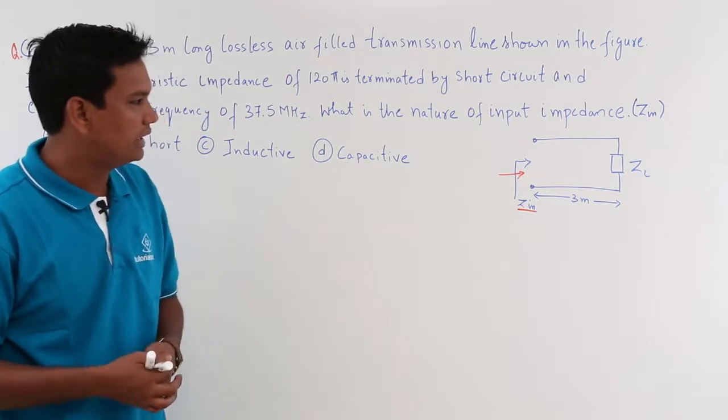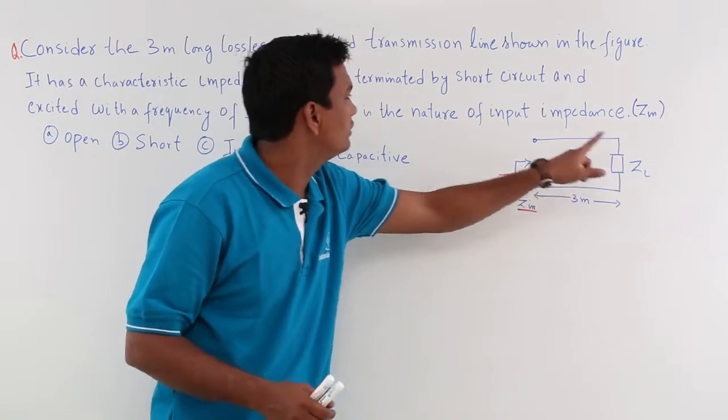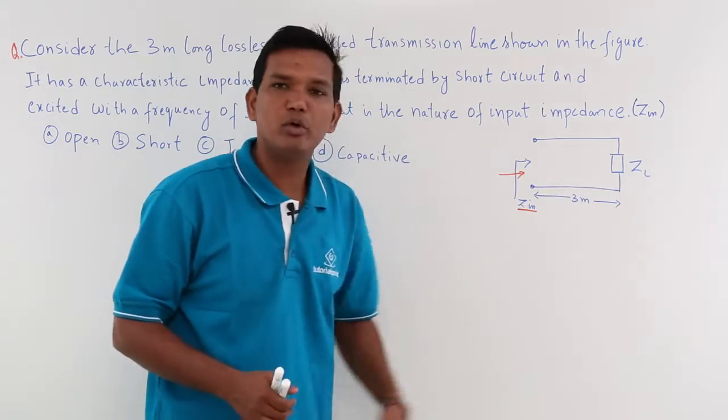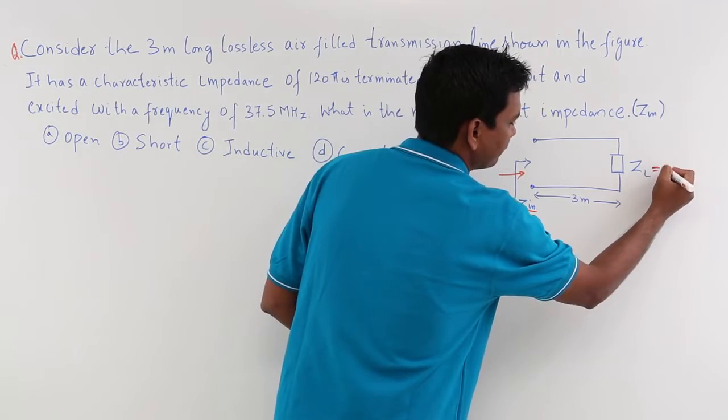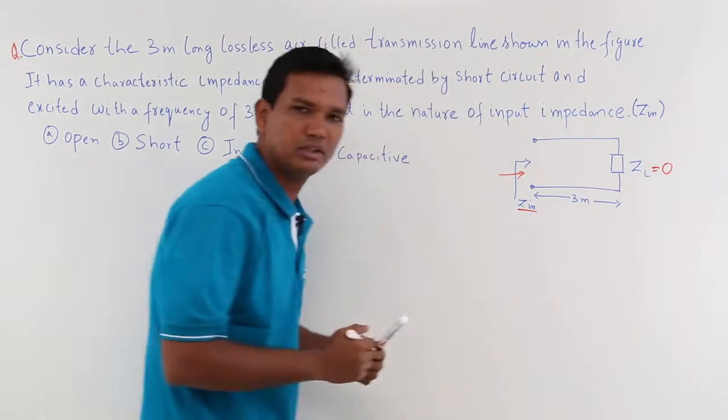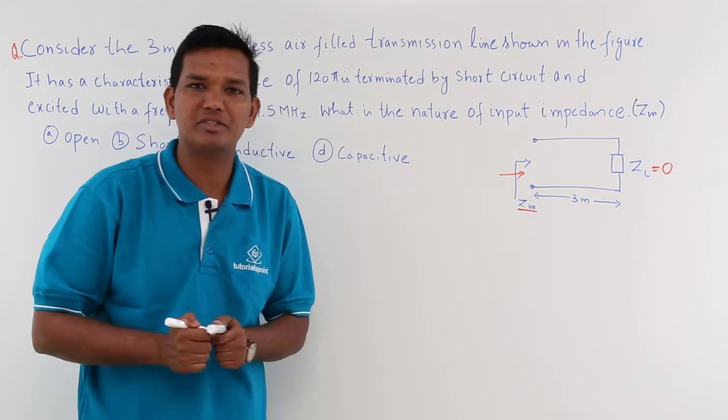The first thing we will do: they have said it is a short circuit. So what will be the value of ZL if it is a short circuit? The value of ZL would be 0. We know that for a short circuit the impedance would be 0.